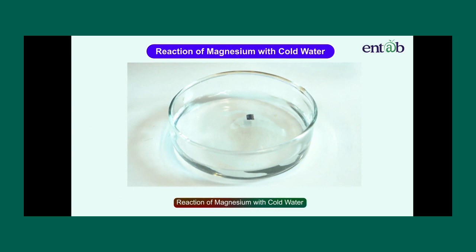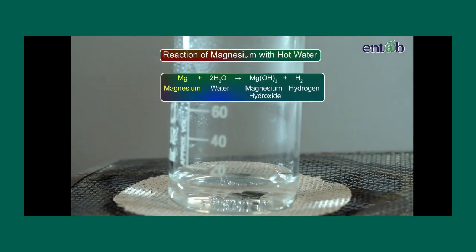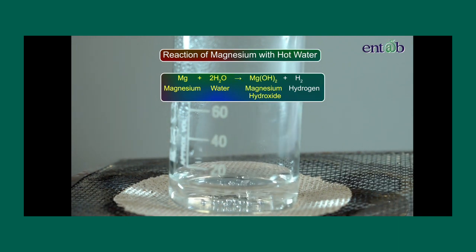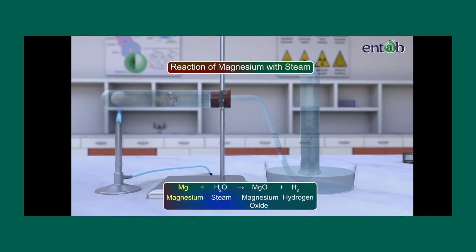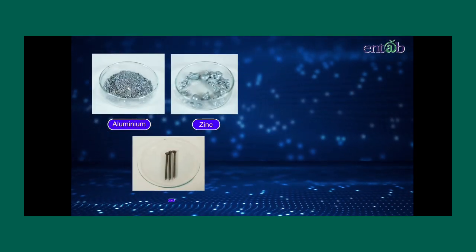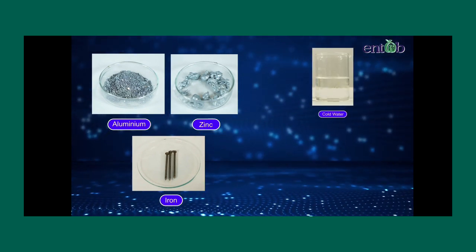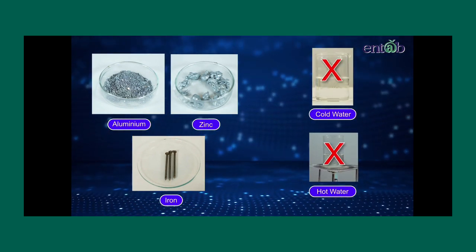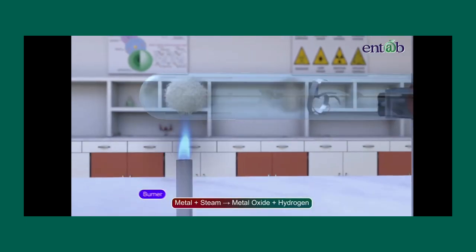Magnesium metal does not react with cold water; it reacts with hot water to form magnesium hydroxide and hydrogen gas. Magnesium also rapidly reacts with steam to form magnesium oxide and hydrogen gas. Metals like aluminium, zinc, and iron react with neither cold nor hot water — they react with steam to form a metal oxide and hydrogen.